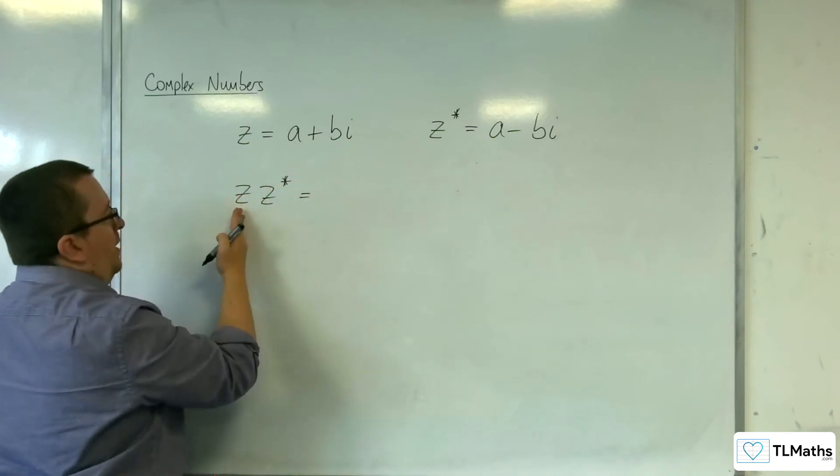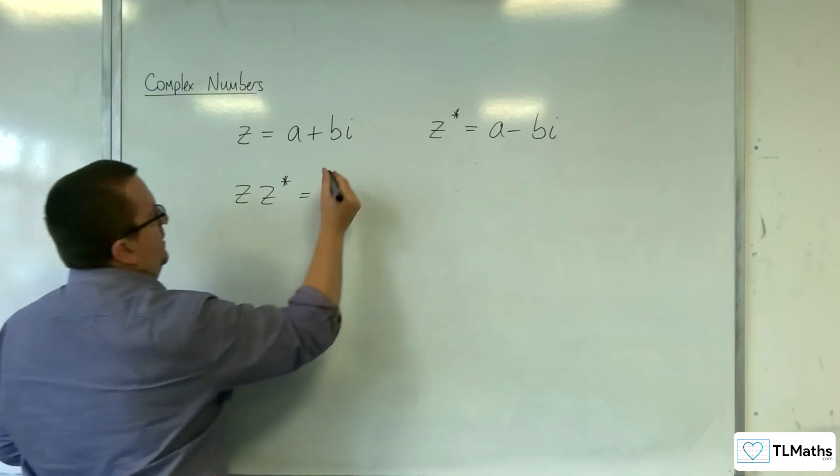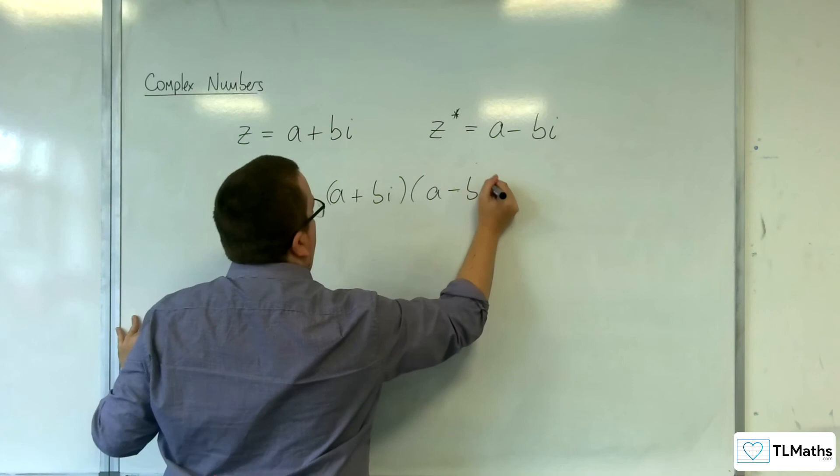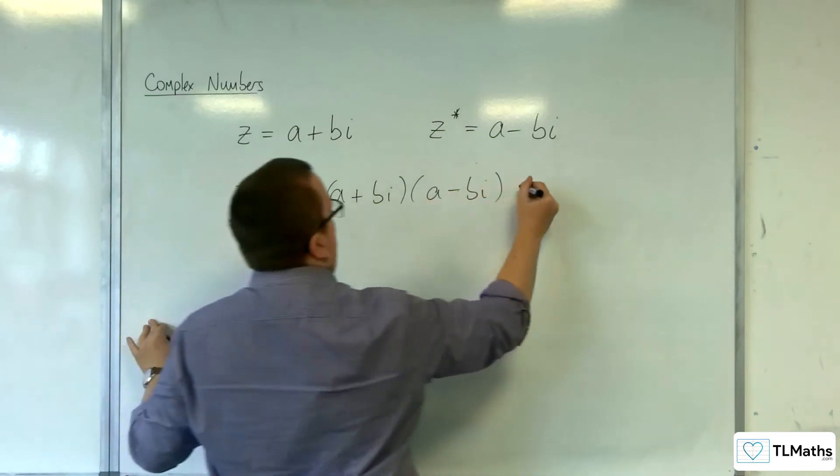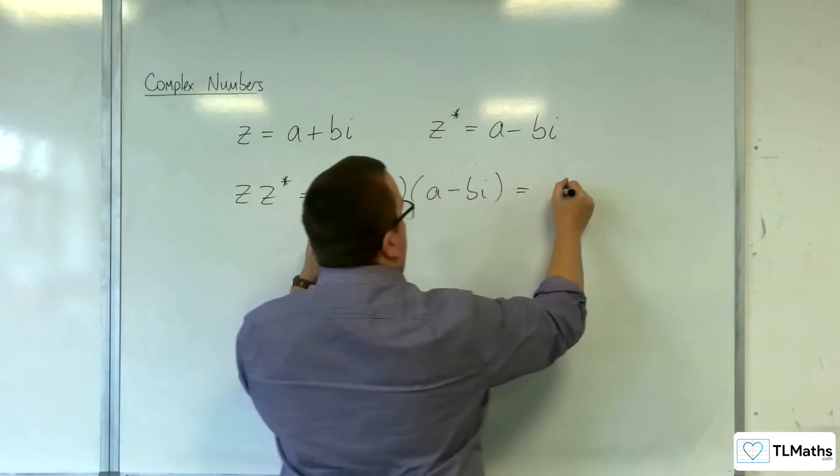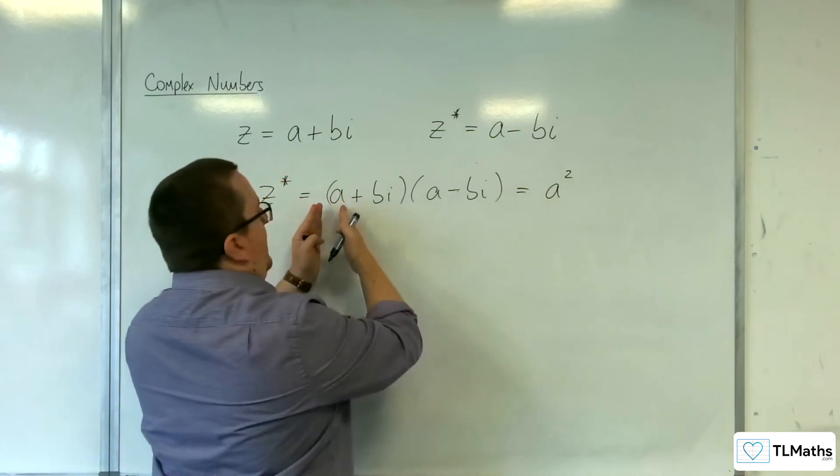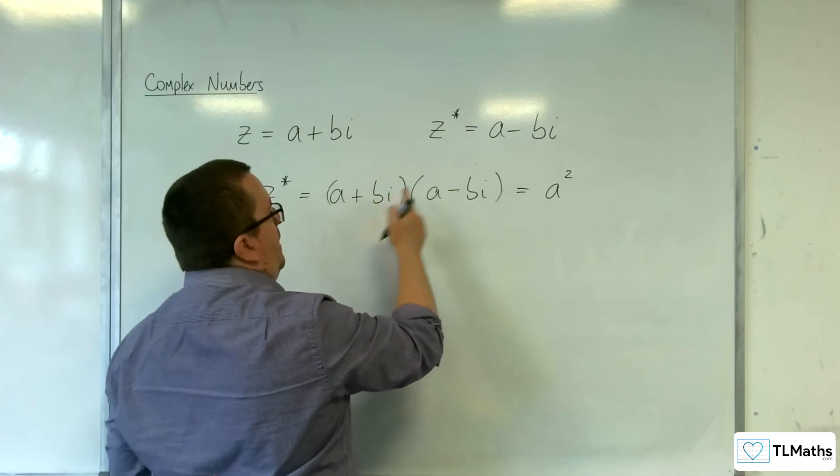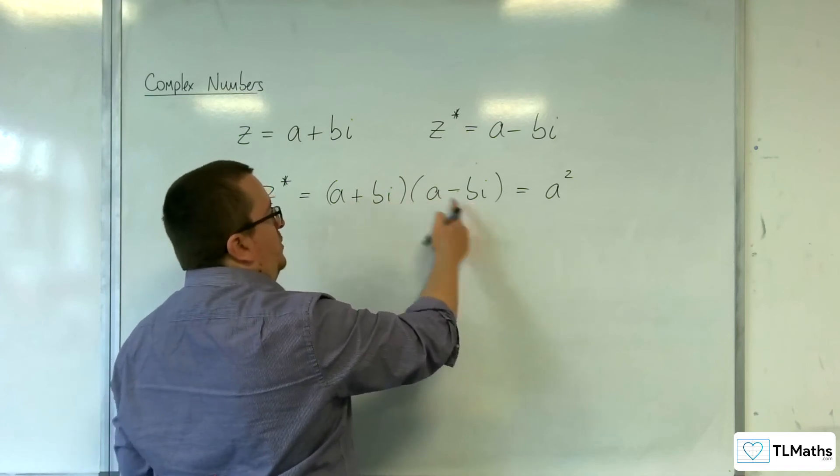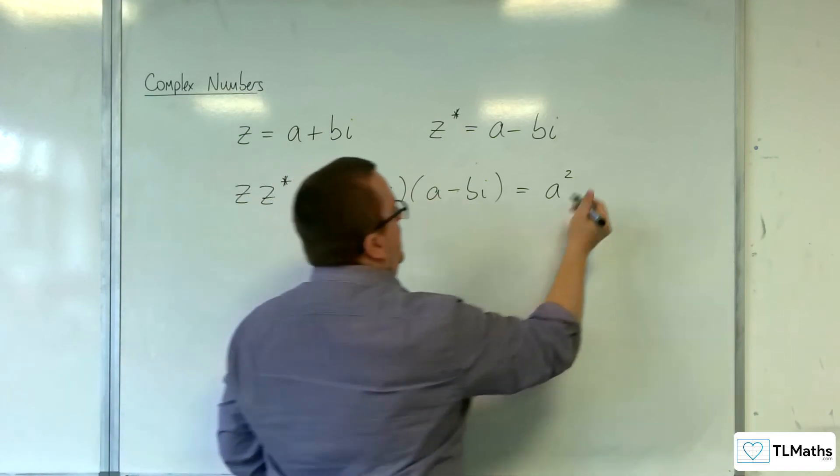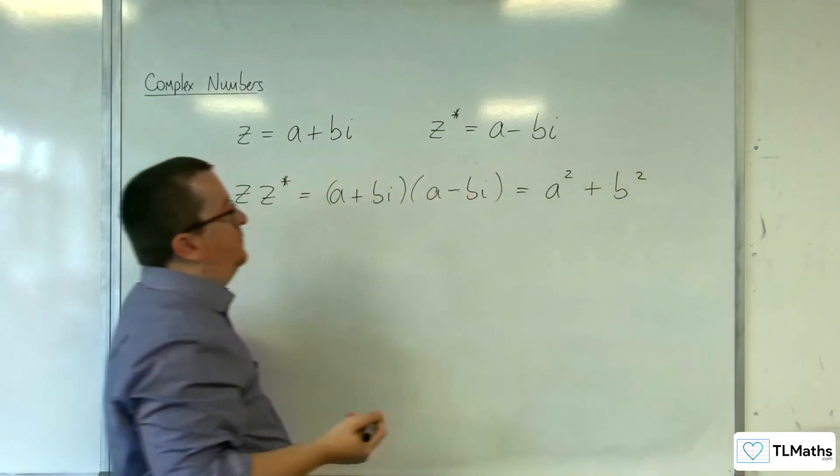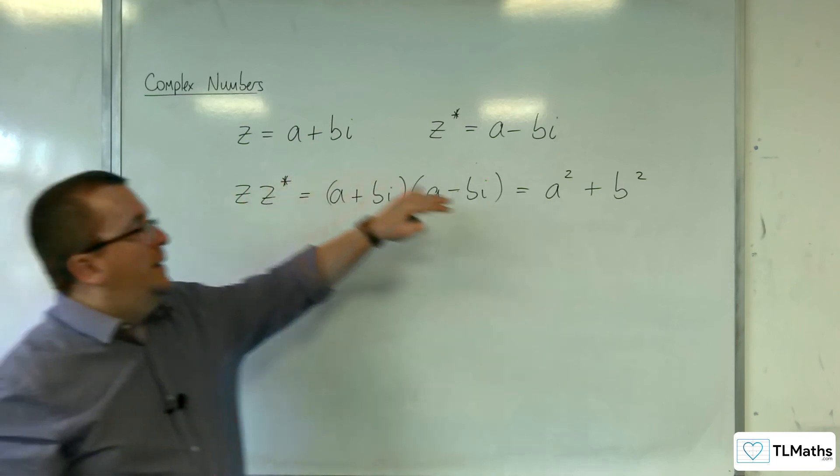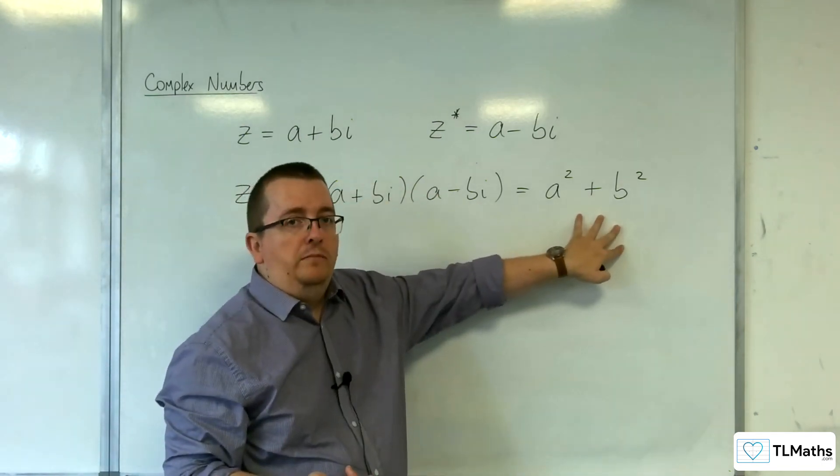So if you multiply a complex number by its conjugate, you've got (a + bi)(a - bi). You get a times a, which is a², you get the a times -bi and a times bi, which knock each other out. And then you've got bi times -bi, which is -b² times -1, and you just get plus b². So z times z* is the same as a² + b².